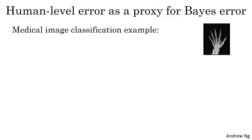Remember from the last video that one of the uses of this phrase, human-level error, is that it gives us a way of estimating Bayes error - what is the best possible error any function could either now or in the future ever achieve? So bearing that in mind, let's look at a medical image classification example.